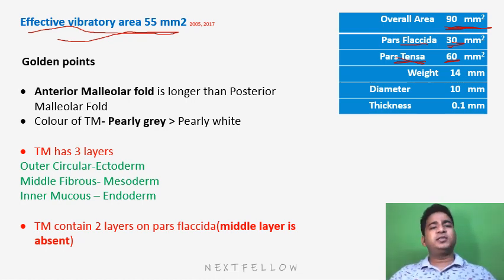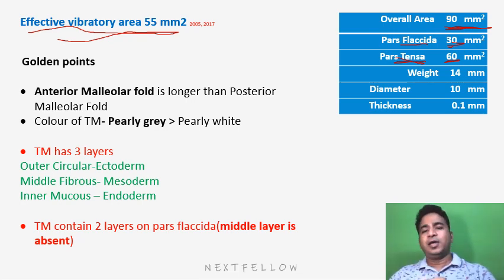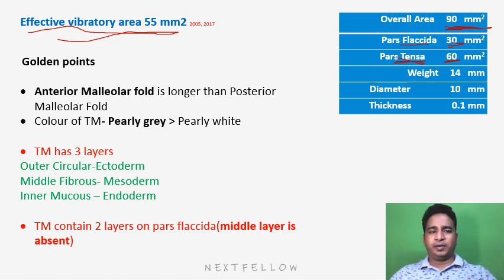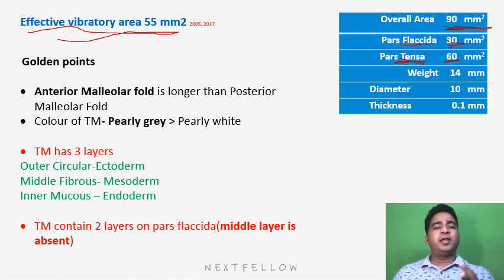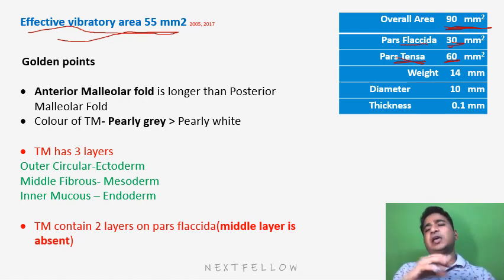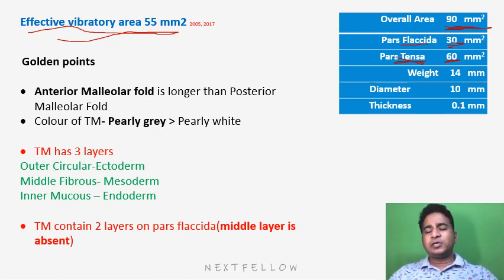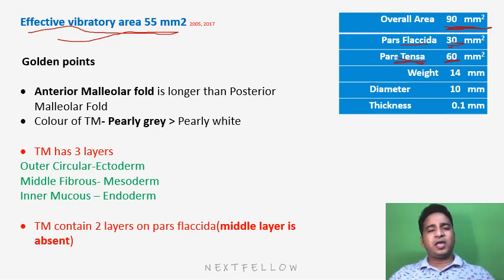Some golden points: the anterior malleoar fold is longer than the posterior malleoar fold, and the reason is the angulation of the tympanic membrane. The color is pearly gray or pearly white. The three layers are: the outer epithelial layer, the middle fibrous layer, and the inner mucous or endothelial layer derived from the endoderm.